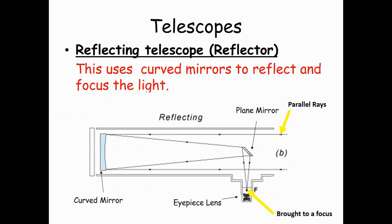A reflecting telescope uses mirrors instead. So again, same idea. We bring the parallel rays of light to a focus before they go through an eyepiece lens and are made into parallel rays coming out again.